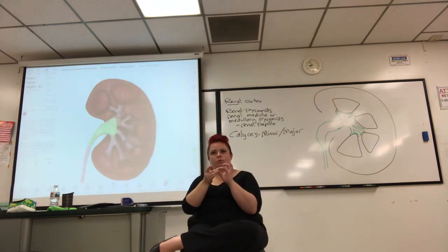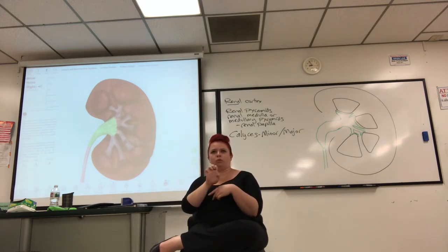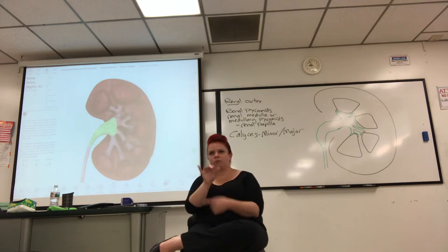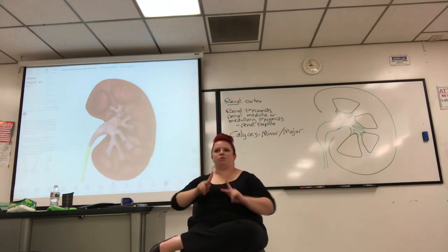The minor calyces flow into the major calyces. Then you have the renal pelvis — basically the first part of the tube, but it's the wide part, wide like your pelvis. And then that's continuous with the ureter.